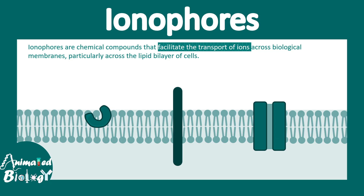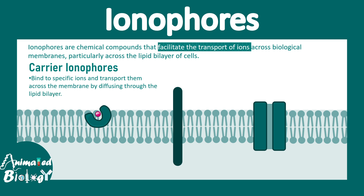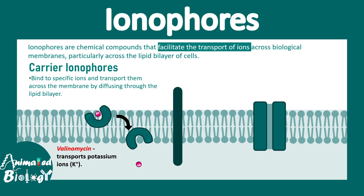Ionophores can act both like a carrier or an ion channel. There are carrier ionophores which can bind to ions and diffuse through the plasma membrane, releasing them on the cytosolic side. One example is valinomycin, which is a transport protein for potassium ions.